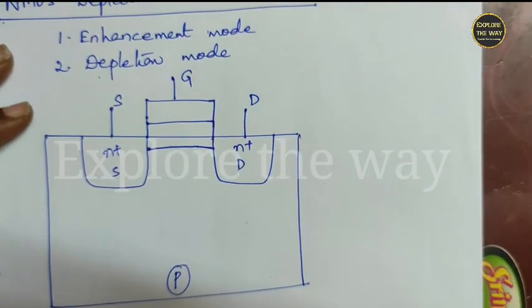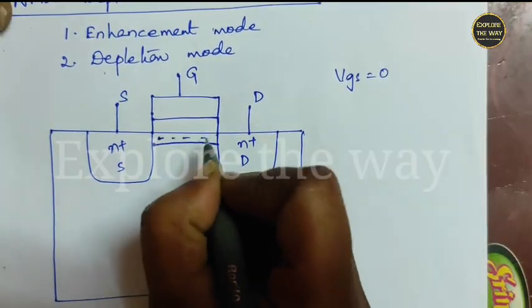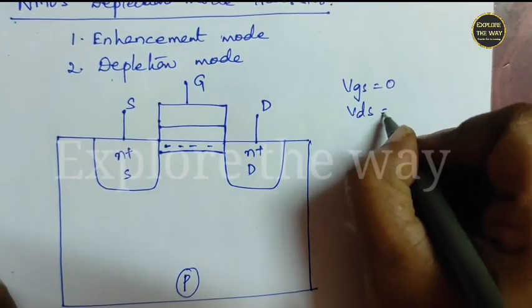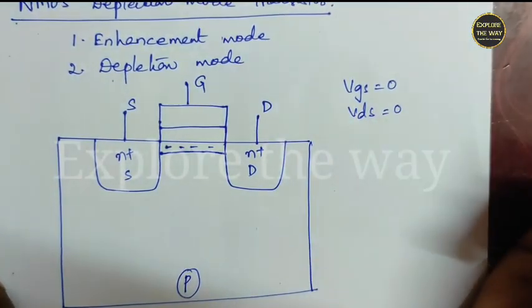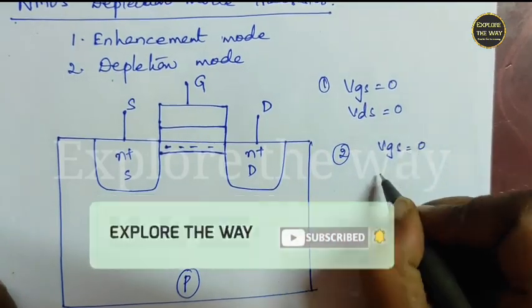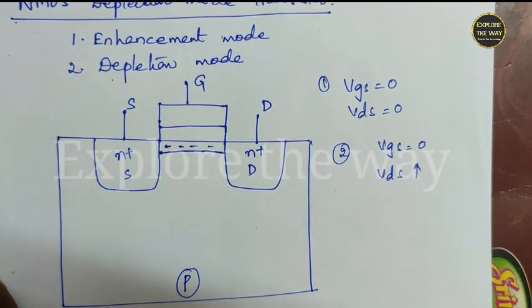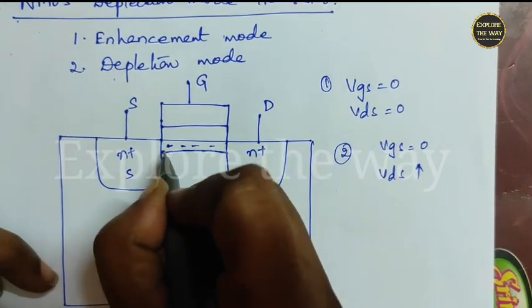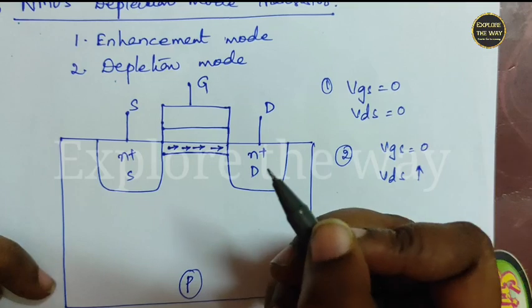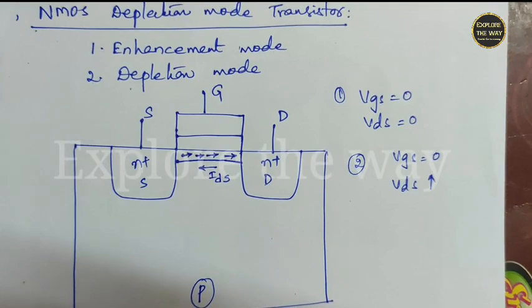Initially, without application of any voltage, that is even when VGS is equal to 0, there are some carriers in the channel region. When VDS is equal to 0, channel is present, but there is no movement of carriers. When you increase VDS, that means when you make VDS positive, the carriers move from source region to drain region. That means there is a current IDS flows from drain to source terminal.